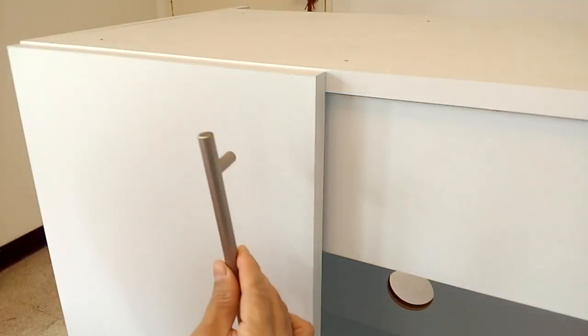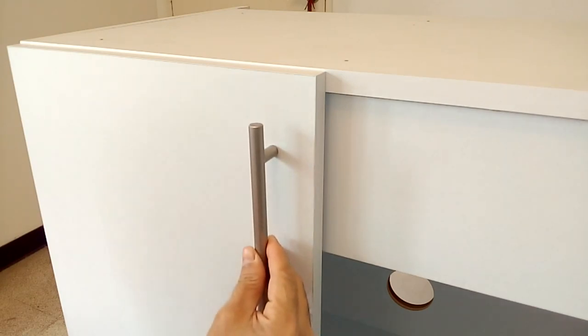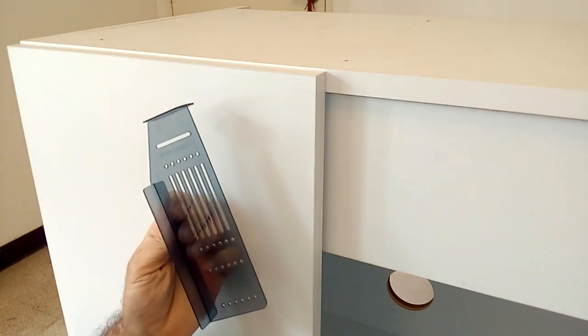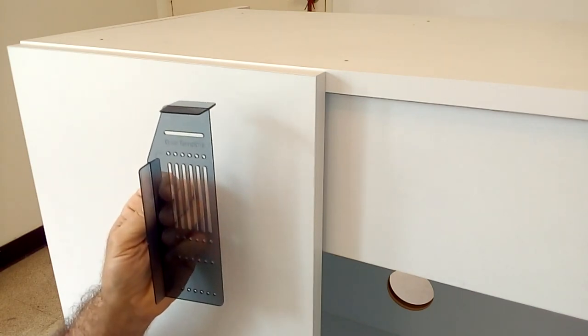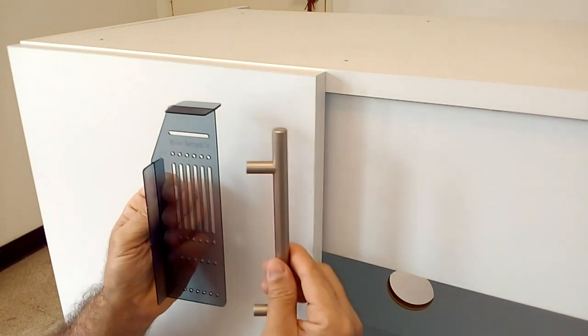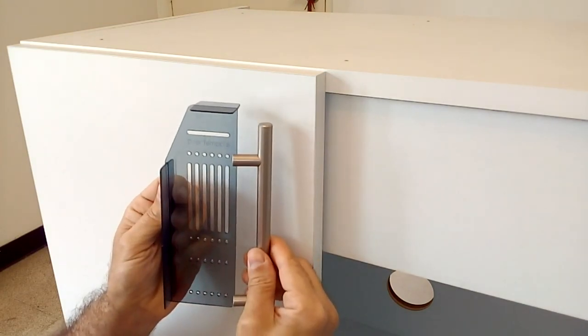If we want to install a handle vertically near the corner of the cabinet door we must use this template. The first thing we have to know is the distance between the screws of the handle that we are going to install on the door.